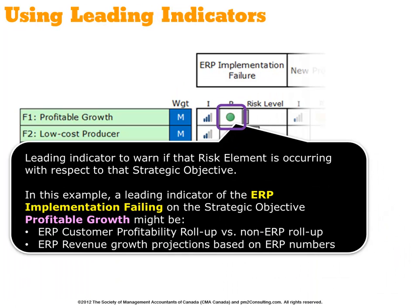These are leading indicators that would give leadership and the organization warning that a particular risk element is occurring with respect to a specific strategic objective. In the highlighted area, we're looking at ERP implementation failure and its leading indicator on the strategic objective of profitable growth. We might use something like the customer profitability roll-up that the new ERP system created compared to the previous system, or revenue growth projections based on the new ERP numbers.